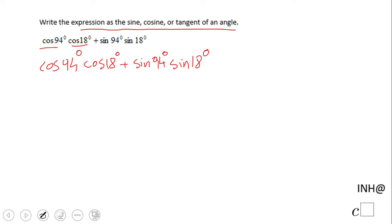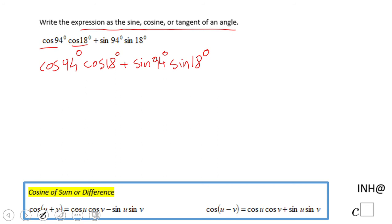we have either cosine of sum or difference - these are the only two that have cosine and cosine. Then we're looking, this is a plus here, so obviously it's gonna be cosine of difference.